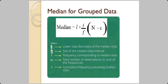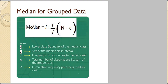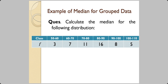For grouped data you need a different approach. The formula is: Median = L + (i/f) × (n/2 − c), where L is the lower class boundary of the median class, i is the class interval size, f is the frequency of the median class, n is the total number of observations, and c is the cumulative frequency just before the median class.